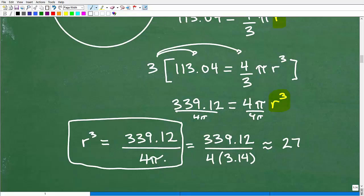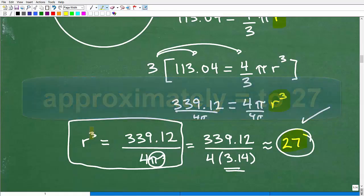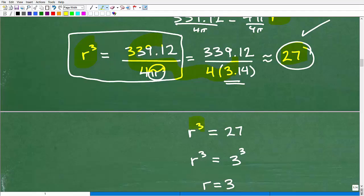Now pi, again, it's an exact value. So let's go ahead and use an estimate for pi, 3.14. So this is 339.12 divided by 4 times 3.14. And when we do this math, we get 27. Wow, that's pretty cool. So when you go into your calculator, you'll get 27. So r cubed, we did all this number crunching, turns out to be equal to 27. So r cubed, that's our radius cubed, is equal to 27.